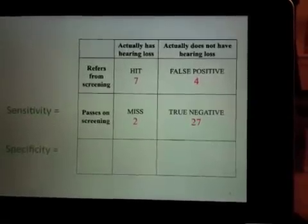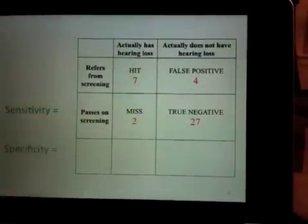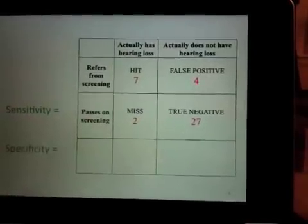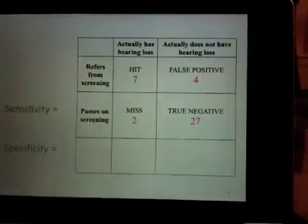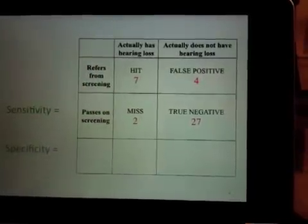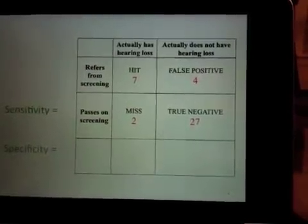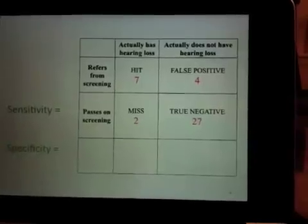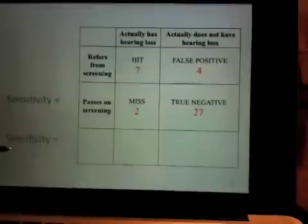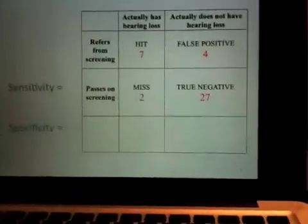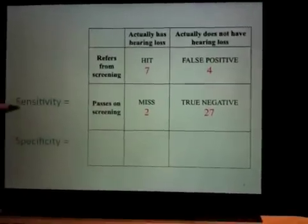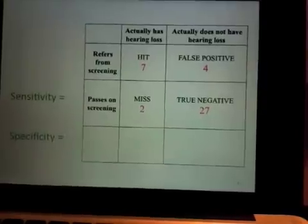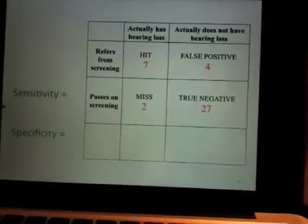For specificity, we take the number of true negatives, which is 27, divided by the total number of people who actually do not have a hearing loss, which is 31. The specificity of this measure is 87%. So it is slightly more specific and slightly less sensitive. In determining screening measures, we want to maximize both of these criteria.